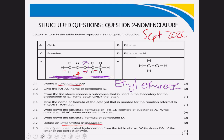Give the name or formula of the catalyst needed for the reaction in question 2.3. It is sulfuric acid. You have the option — you can write H₂SO₄ or sulfuric acid. But if the question specifically says 'name,' write sulfuric acid. If the question specifically says 'formula,' write only H₂SO₄.